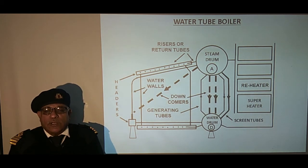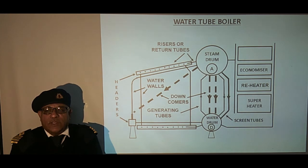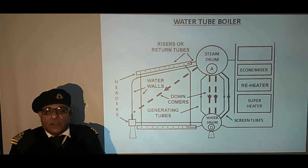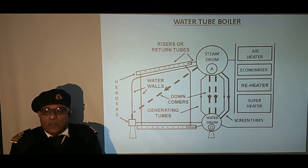The next component is the economizer. The economizer is used for heating the feed water and for recovering the waste heat of the flue gases. The last component is the air heater, which is also a waste heat recovery unit used to increase the efficiency of the boiler.